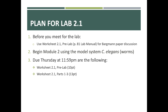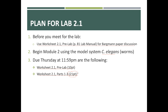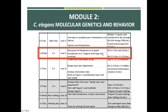Let me provide a brief overview of what we'll be doing today. Prior to meeting with your teammates, you'll complete Worksheet 2.1 by reading the Bargman paper, which is linked under week three on your lab Blackboard. When you meet with your teammates, you will all begin module two, working with C. elegans. Due this Thursday at 11:59 PM are two worksheets: the pre-lab and Worksheet 2.1, which has three parts and is worth 21 points. This is the first lab for our C. elegans module; we'll have two more days looking at data from chemotaxis assay experiments.